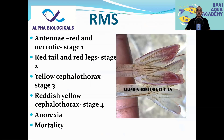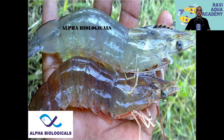Running mortality syndrome has different stages. In the first stage, the antenna turns red. In the second stage, uropods turn red. In the third stage, the hepatopancreas turns reddish yellow — especially the cephalothorax and hepatopancreas become reddish yellow — and there is anorexia. Finally, you can see mortality. The top shrimp is healthy; the bottom is in the fourth stage of running mortality, after which mortality occurs.